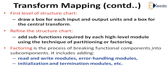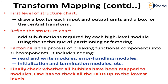We then refine the structure chart. For each of these units, which could be complex, we add sub-functions required by the high-level module using the technique of factoring — breaking them into smaller units using divide and conquer. Factoring is the process of breaking functional components into sub-components; it can include adding read/write modules, error handling modules, initialization, and termination modules, or breaking processing elements into smaller independent processing units. Finally, after a few iterations of refining using factoring, we check whether all bubbles have been mapped to modules, going up to the lowest level of the DFD to ensure all bubbles are accommodated in the structure chart hierarchy.